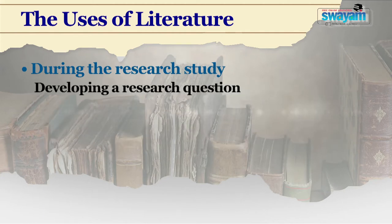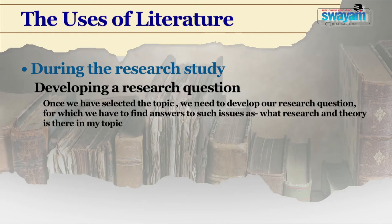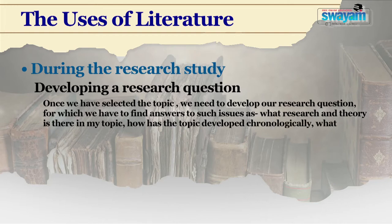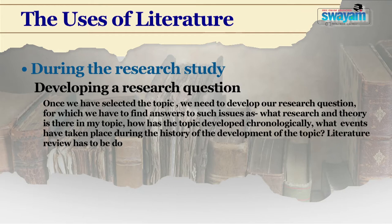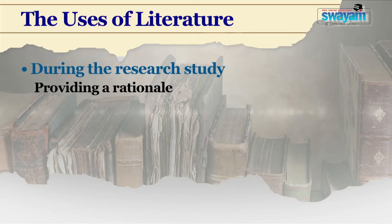We also need literature for developing a research question. Once we have selected the topic, we need to develop our research question, for which we have to find answers to such issues as: what research and theory is there in my topic? How has the topic developed chronologically? What events have taken place during the history of the development of the topic? Literature review has to be done to reach the solution to these queries. Through literature review, we can find out the inconsistencies, shortcomings and contradictions existing in the knowledge of our topic and the lack of a certain type of evidence or substantiation in it, and we can create our rationale around that limitation.